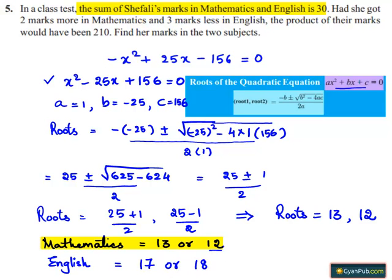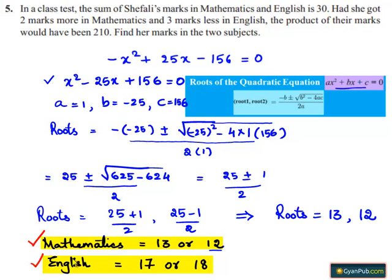Therefore, Shefali's marks in Mathematics is either 13 or 12, and her marks in English is either 17 or 18.